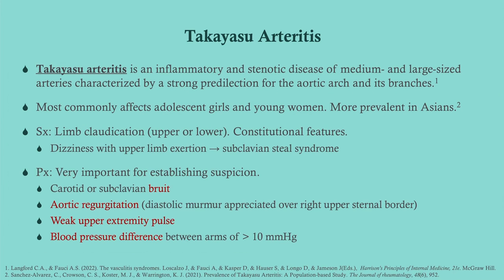Takayasu's arteritis is inflammation and stenosis of medium and large arteries, primarily the aortic arch and its branches. It usually affects young women and is more prevalent in Asians — it was discovered in Japan, hence the name. Symptoms include limb claudication, which makes sense given the involvement of branches like the brachiocephalic and common carotid arteries supplying blood to the brain, head, and upper limbs. Constitutional features are also present but less prominent.